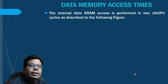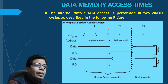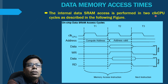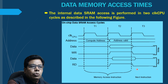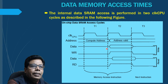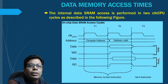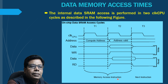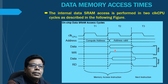The internal data SRAM access is performed in two clock cycles of the CPU. You can see the CPU clock with T1 as the first cycle and T2 as the second cycle. During T1 it computes the address, and if the address is valid then data will be available during T2, when the read or write operation is performed. Memory access instructions are executed within these two cycles, which enhances the speed of processing.